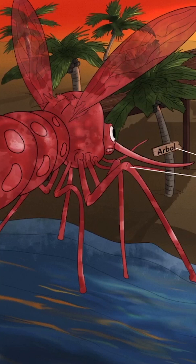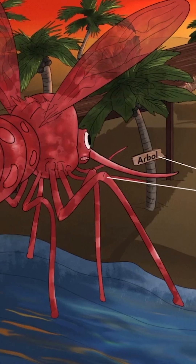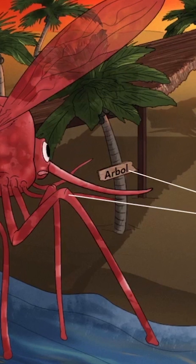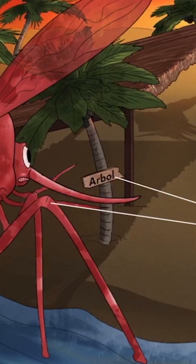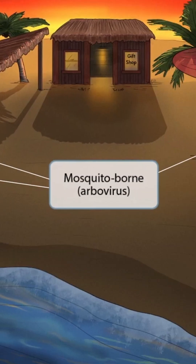These mosquitoes will help you remember that Zika virus is mosquito-borne, which by definition also means it is arthropod-borne, or an arbovirus. We like to use the Spanish word for tree, arbo, to help us remember the word arbovirus. So again, mosquitoes and the arbo tree stands for mosquito-borne arbovirus.